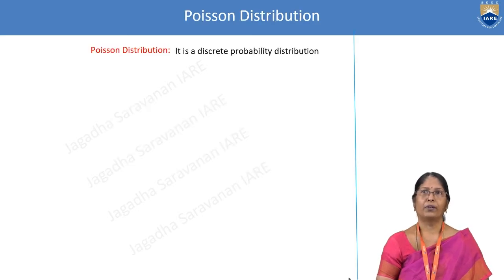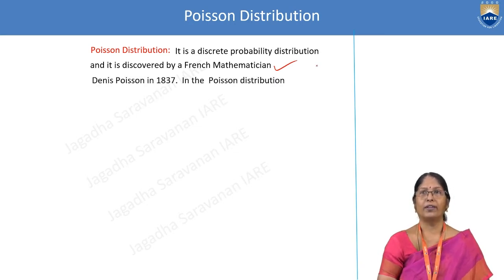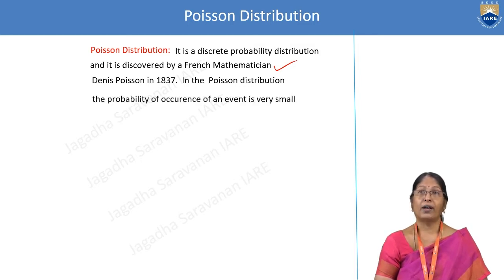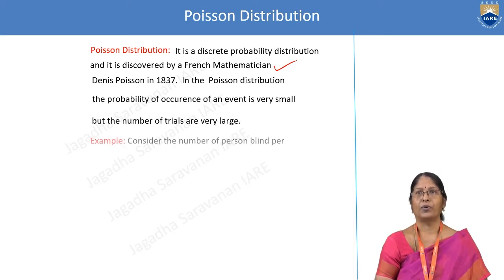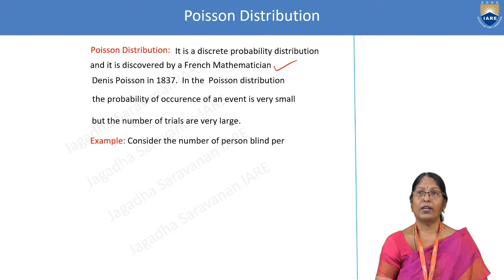Poisson distribution is a discrete probability distribution discovered by French mathematician Denis Poisson in the year 1837. In Poisson distribution, the occurrence of an event is very small and the trials are very, very large. For example, in a city like Hyderabad where lots of people are living, finding the probability of how many blind persons are there — where the data is large but our requirement is very small — we can use Poisson distribution.